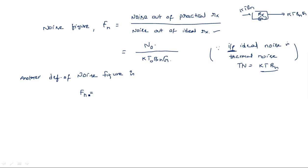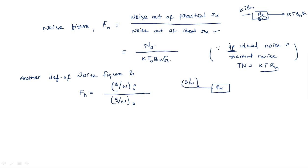Noise figure Fn can also be defined as the signal-to-noise ratio at the input of the receiver divided by the signal-to-noise ratio at the output. That means, for a given receiver, we compare the SNR at the input to the SNR at the output. You can also say noise figure represents the amount of degradation in the signal-to-noise ratio when passing through the receiver.